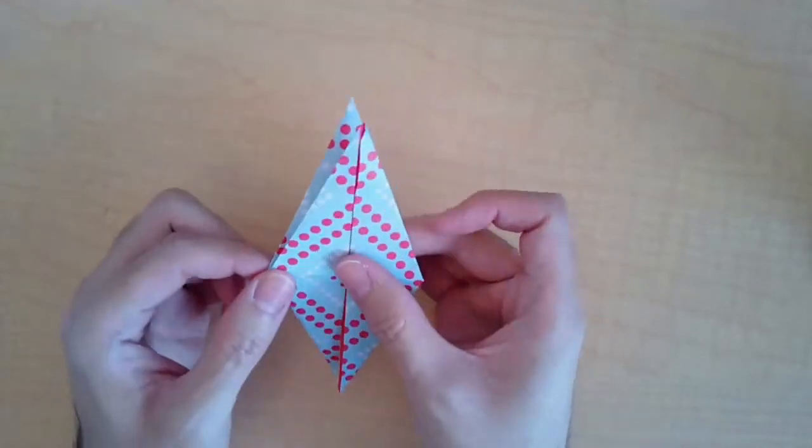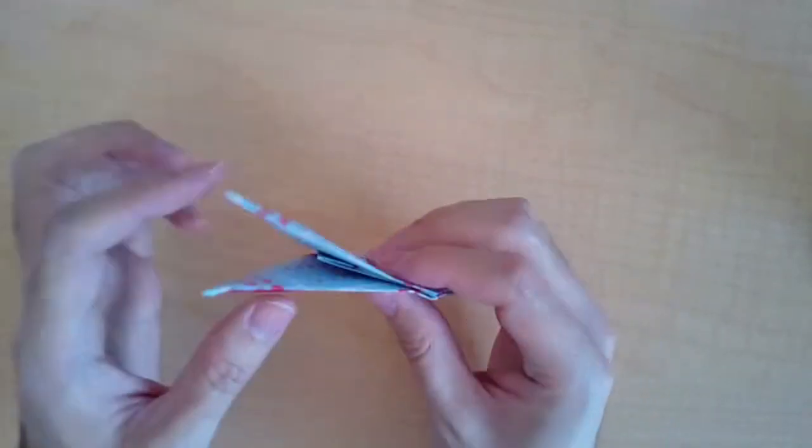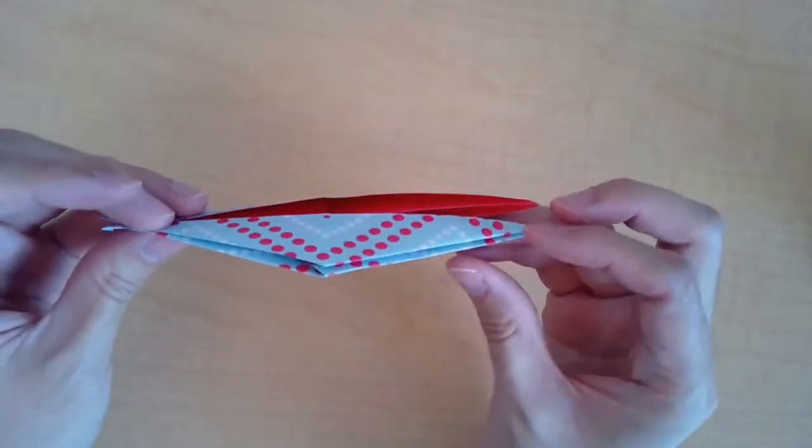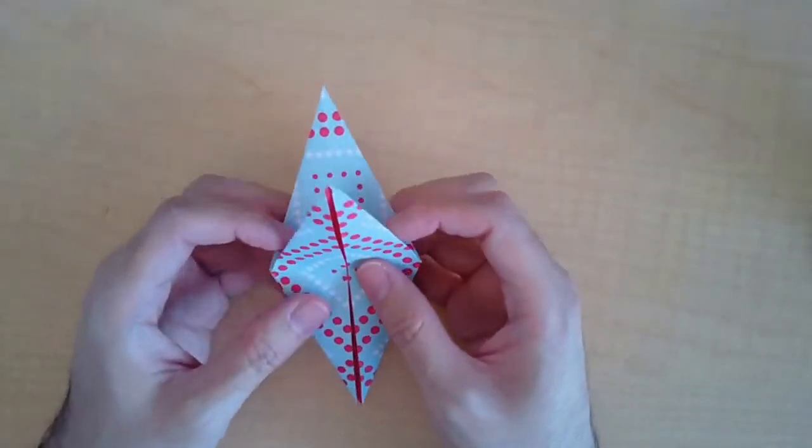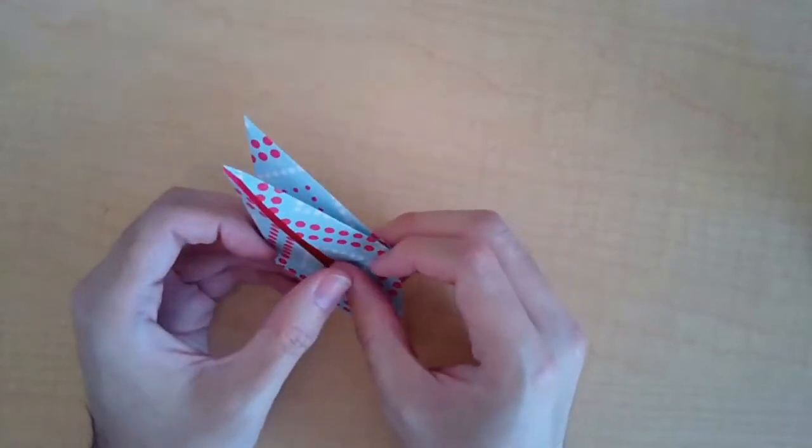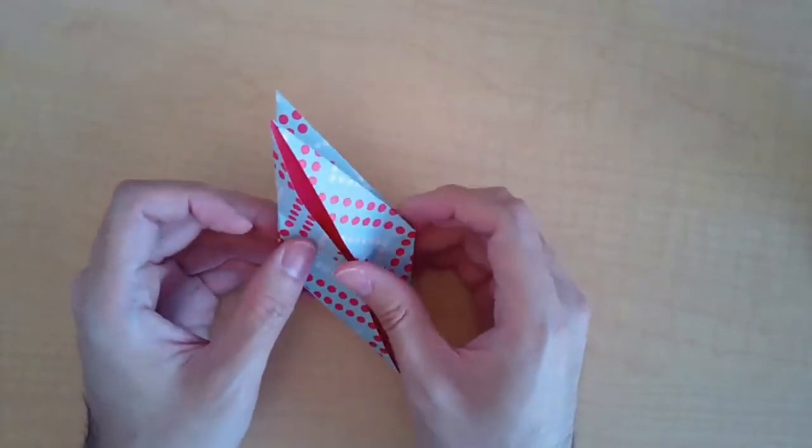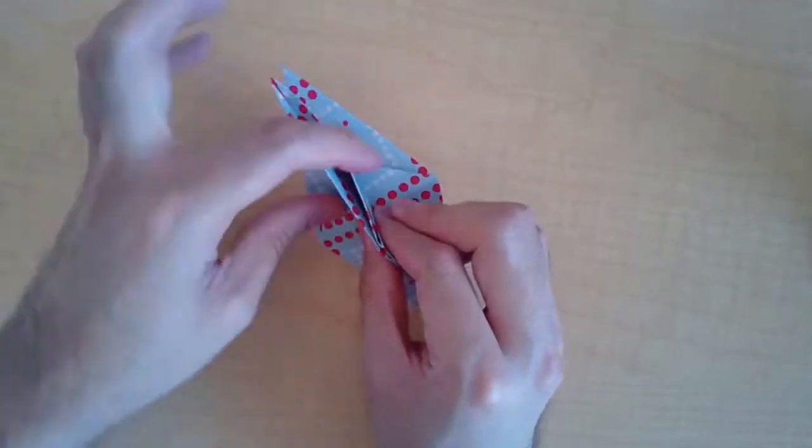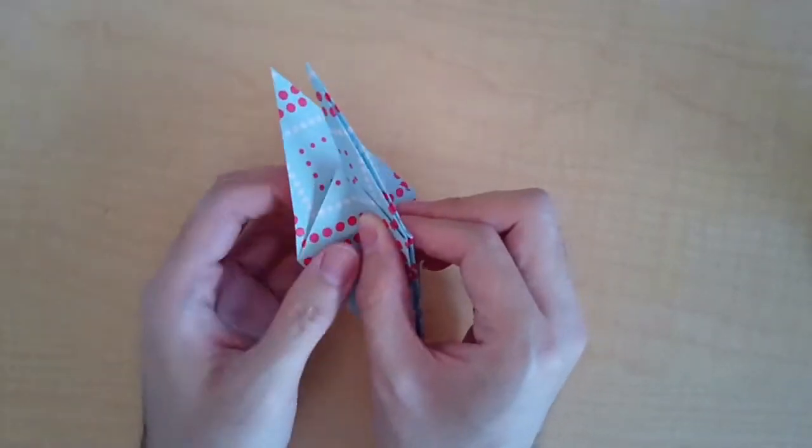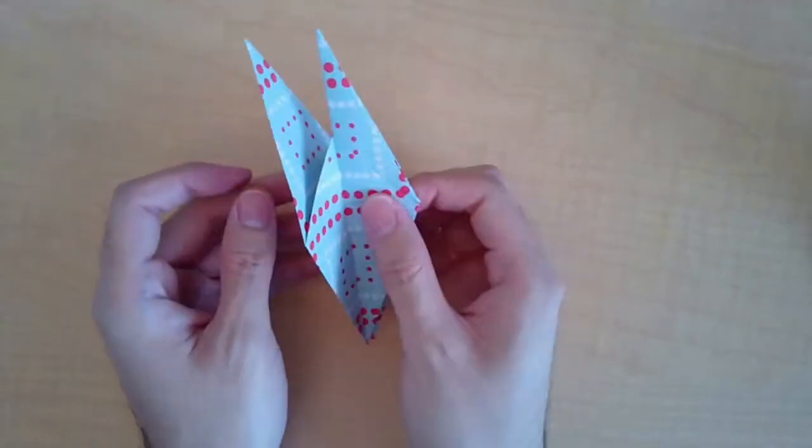Okay, so now you should have a diamond shape like so. You have these two flaps up here and then these two legs down here. So on the side that has the opening here, you're going to close that, and then you're going to do the same on the other side.